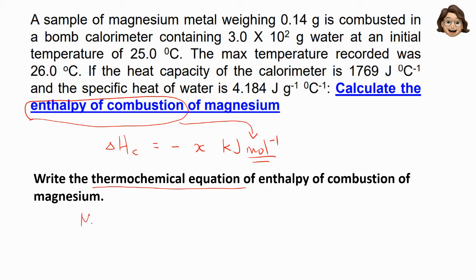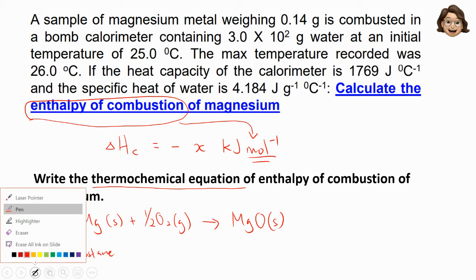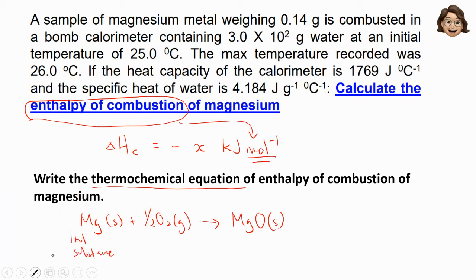Next: write the thermochemical equation for the enthalpy of combustion of magnesium. In this case, we write magnesium plus oxygen to give magnesium oxide. Remember, magnesium must be only one mole, according to the definition.